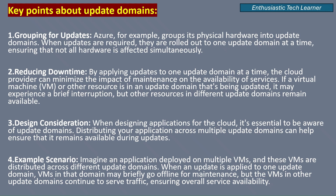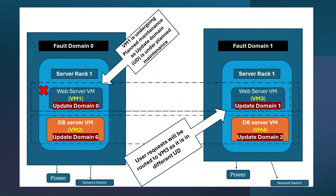Imagine an application deployed on multiple VMs, and these VMs are distributed across different update domains. When an update is applied to one update domain, VMs in that domain may briefly go offline for maintenance, but the VMs in other update domains continue to serve traffic, ensuring overall service availability.